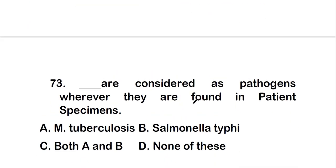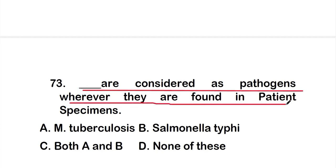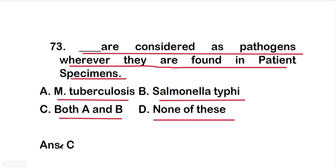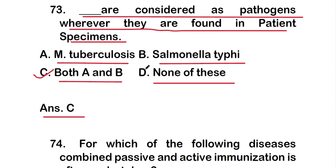Question 73: Dash are considered as pathogens wherever they are found in a patient's specimen — options: A: Mycobacterium tuberculosis, B: Salmonella typhi, C: both A and B, D: none of these. The right answer is option C: both Mycobacterium tuberculosis and Salmonella typhi are considered pathogens whenever they are found in a patient specimen.